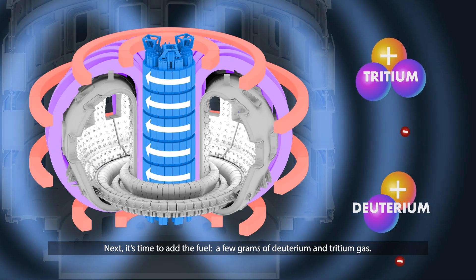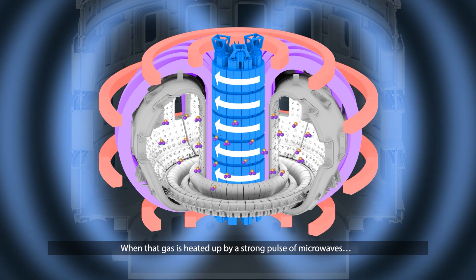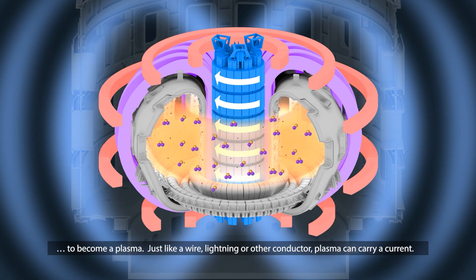Next, it's time to add the fuel: a few grams of deuterium and tritium gas. When that gas is heated up by a strong pulse of microwaves, it breaks down into charged particles to become a plasma.